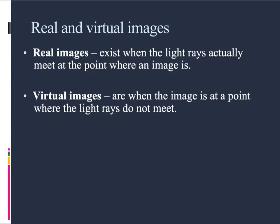When we're talking about real and virtual images, I introduced a virtual image in the last section when we talked about flat mirrors. If you have a candle and somebody's eye looking at the mirror, the images reflect off, but we see them back behind the mirror. Because those light rays don't actually meet in reality, that makes it a virtual image. A real image exists when the light rays actually meet at the point where the image is. A virtual image is when the image is at a point where the light rays do not meet.